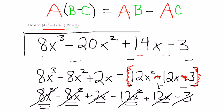And lo and behold, we have expanded. 8x cubed minus 20x squared plus 14x minus 3 equals the product 4x squared minus 4x plus 1 times 2x minus 3.